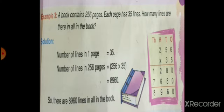Lines in 1 page are given to you. You have to find out lines in more pages. Please take statement from second line. Number of lines in 1 page is equal to 35. So number of lines in 256 pages is equal to 256 into 35.